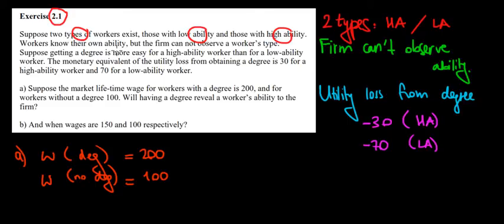Suppose that getting a degree is easier for a high ability worker. The equivalent of the utility loss from getting a degree is equal to 30 for a high ability worker because it's easier, so he loses less utility, and it's 70 for a low ability worker because it's harder to get.